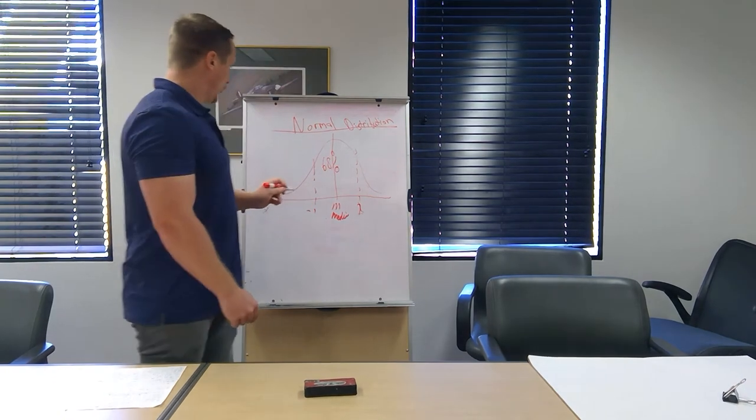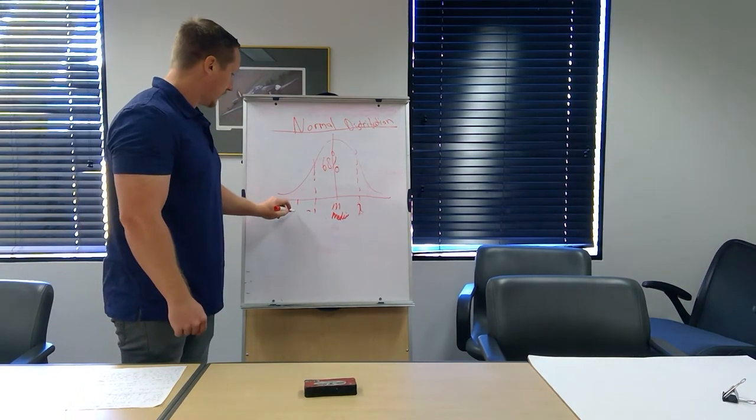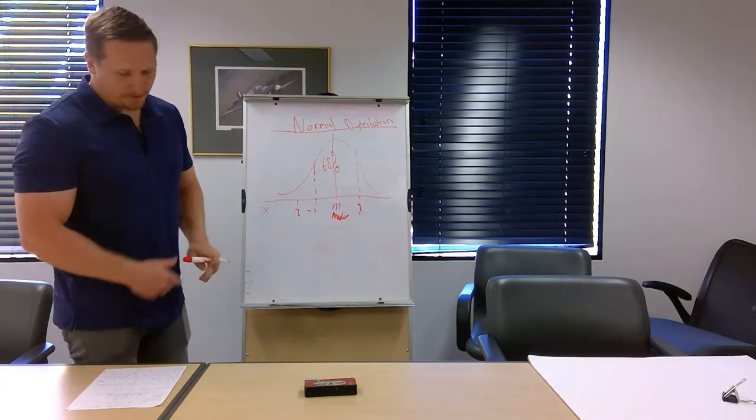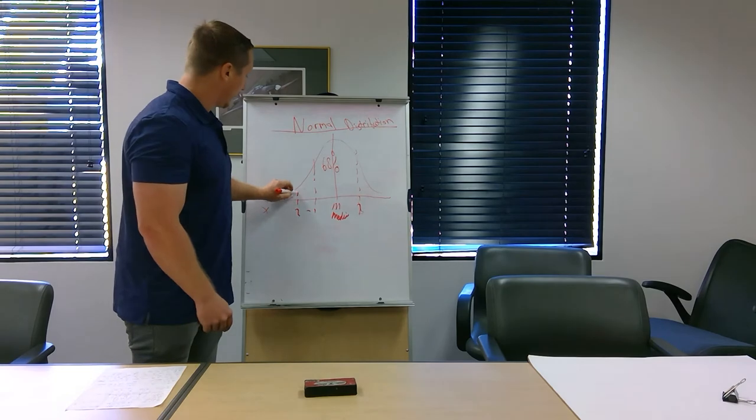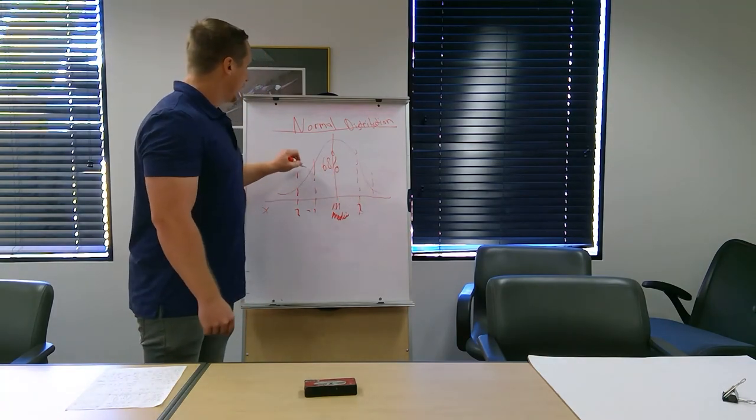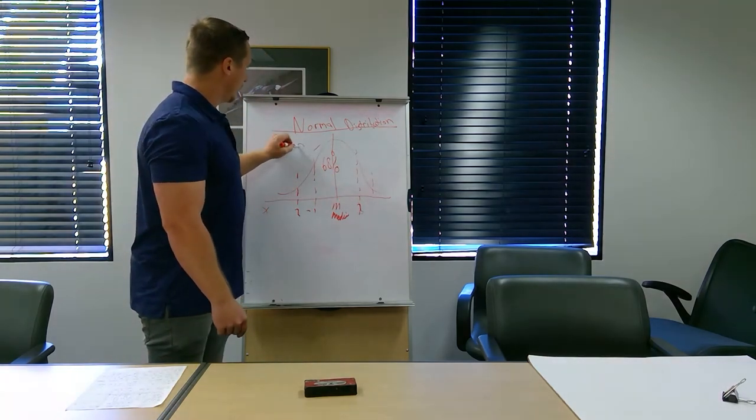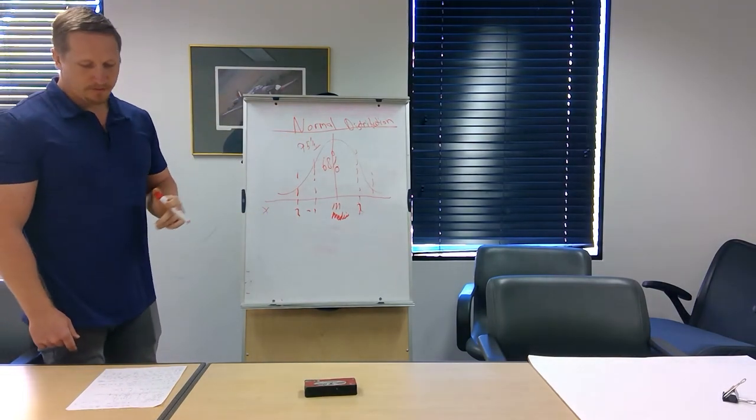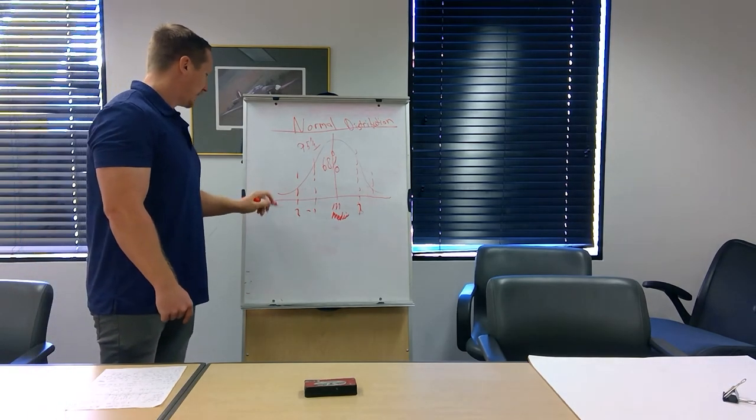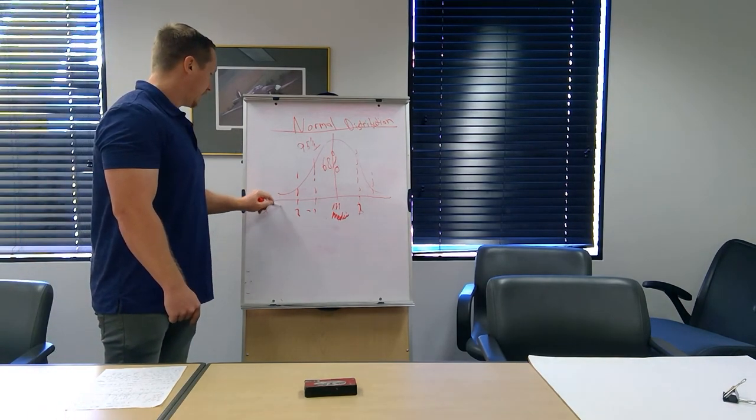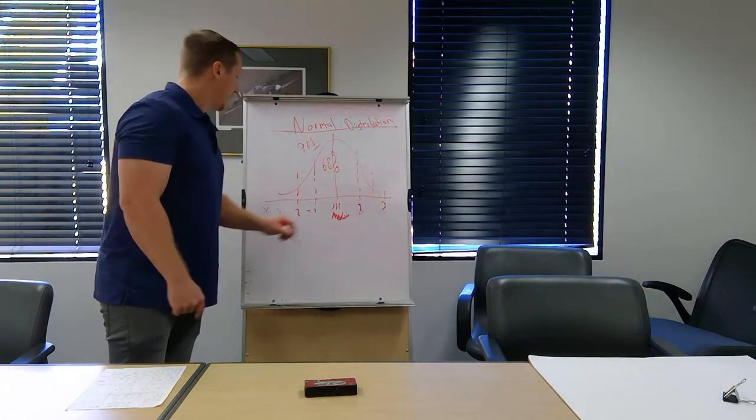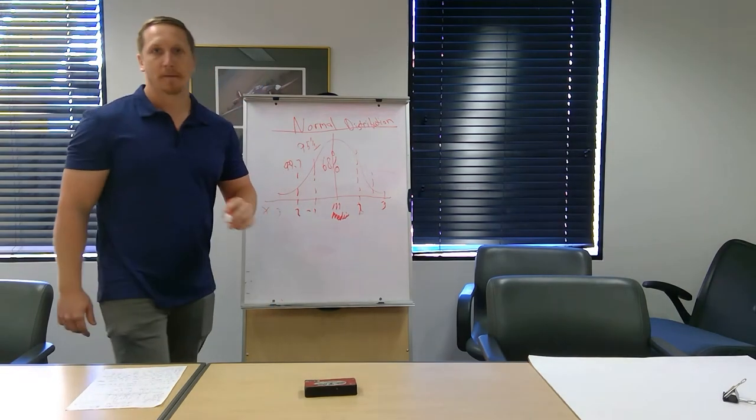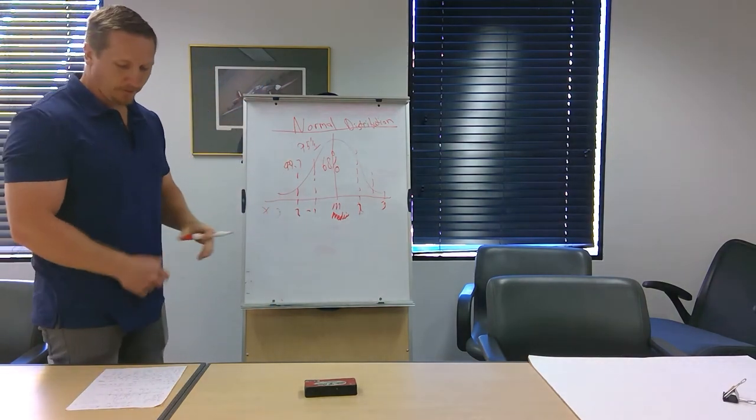Next is two standard deviations plus or minus the mean, which is the 95% rule. So if we draw this line up, this whole area under the curve equals 95%. And the next one is three standard deviations plus or minus the mean, which takes up 99.7% of the total area under the curve.